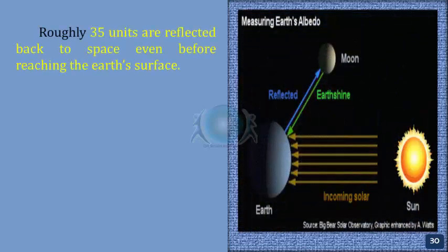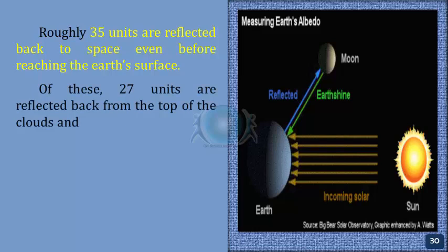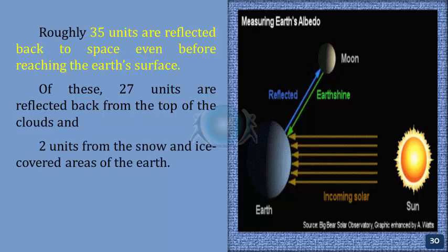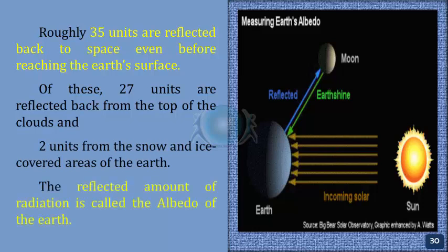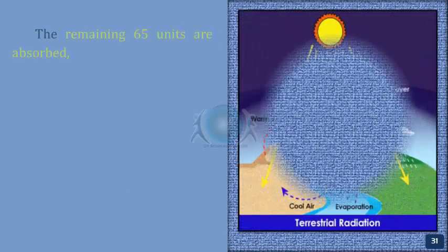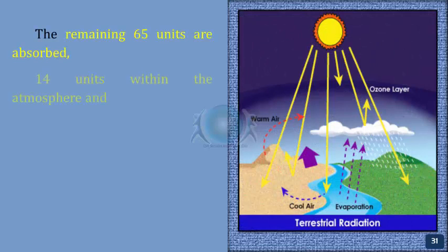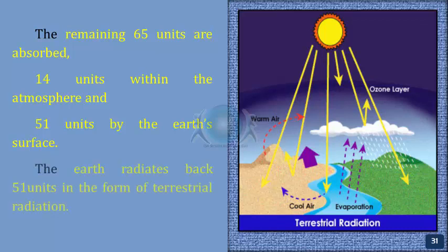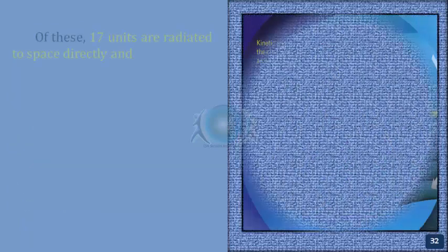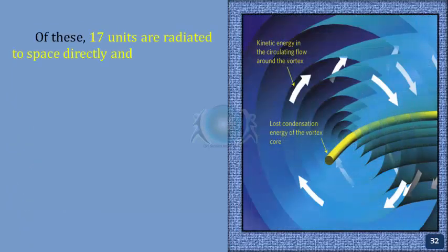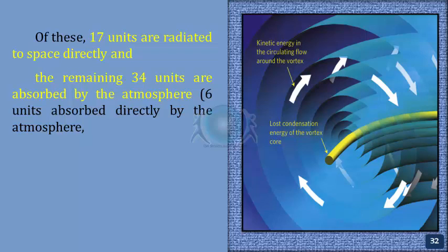Roughly 35 units are reflected back to space before reaching the Earth's surface. Of these, 27 units are reflected back from the top of the clouds and 2 units from snow and ice-covered areas of the Earth. The reflected amount of radiation is called the albedo of the Earth. The remaining 65 units are absorbed — 14 units within the atmosphere and 51 units by the Earth's surface. The Earth radiates back 51 units in the form of terrestrial radiation, of which 17 units are radiated to space directly and the remaining 34 units are absorbed by the atmosphere.